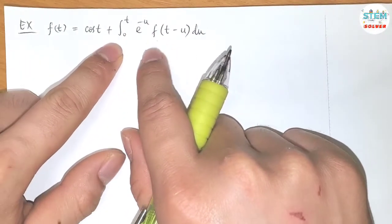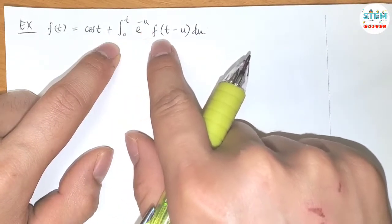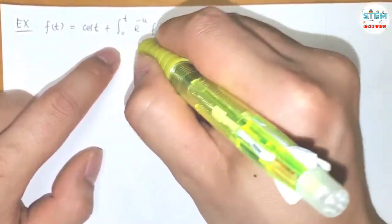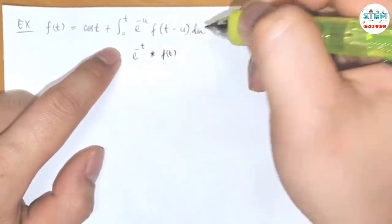If you take a closer look at this, you can see that this is an integral in terms of u and in terms of t minus u. So that's a convolution. This can be written as e to the negative t convoluted with f of t.